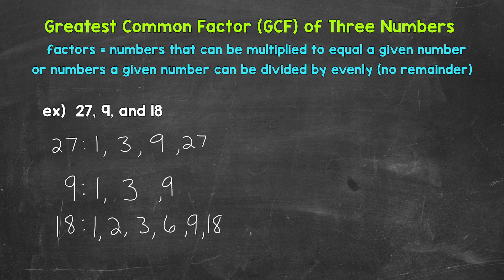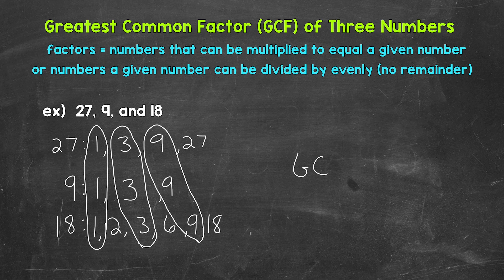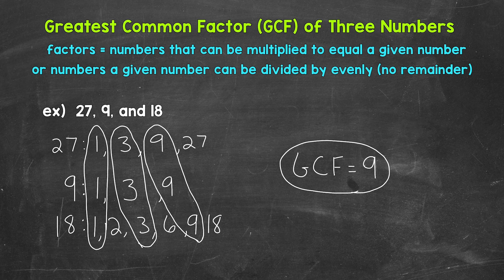Now that we have all of the factors listed for our numbers, we need to look for common factors — factors they share — and specifically the greatest common factor, the greatest factor in value that they all share. 1 is going to be a common factor, 3 is going to be a common factor, and 9 is going to be a common factor. So there are 3 common factors between these numbers. The greatest common factor is going to be 9. The GCF, which stands for greatest common factor, equals 9. So the greatest common factor of 27, 9, and 18 is 9.